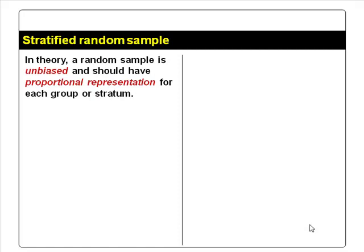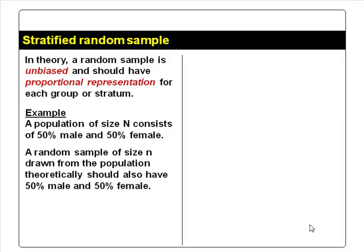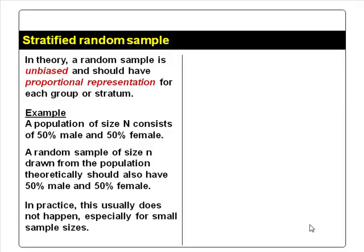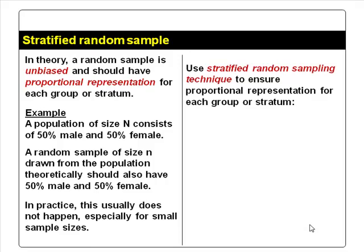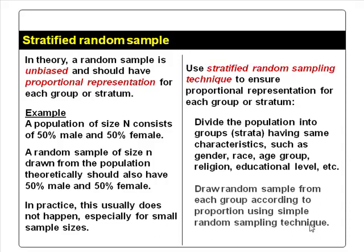Sometimes we not only want a random sample, we want a stratified random sample. A stratified random sample has proportional representations for each group or stratum. For example, a population may consist of 50% male and 50% female — a random sample should theoretically also consist of 50% male and 50% female, but in practice this usually does not happen, especially for smaller sample sizes. To ensure proportional representation, we divide the population into groups or strata — such as male and female — and draw a random sample from each group according to the proportions. This can also be applied to other characteristics such as race, age group, religion, and educational level.